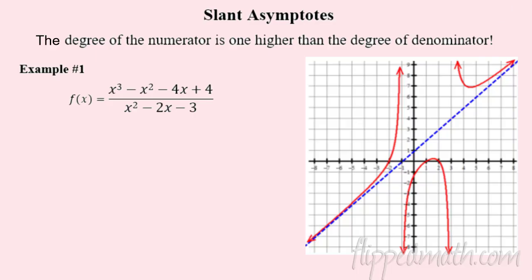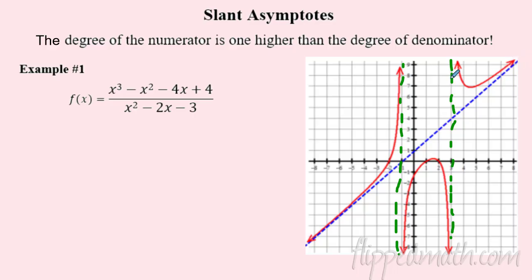Let's take a look at the next section — part B is all about slant asymptotes. We've done vertical asymptotes, and you can see them on this rational function over here. We know we can factor the bottom to find vertical asymptotes. But every now and then we get a slant asymptote — check out this blue line. This happens when the degree of the numerator is one higher than the degree of the denominator.